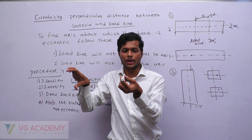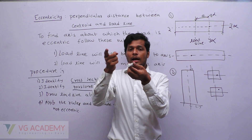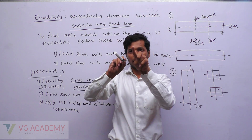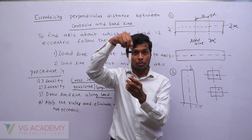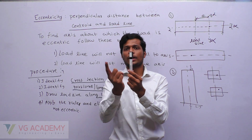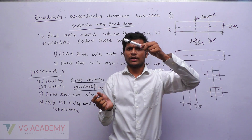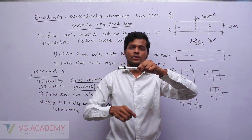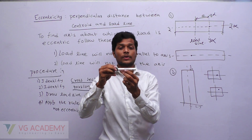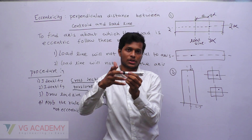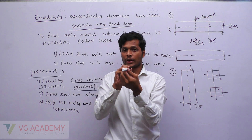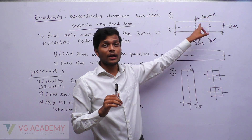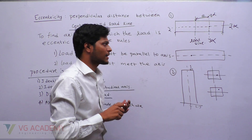This load is eccentric about the X axis. You can see this is the X axis if this is the beam — that is the reason I will write the bending moment like this. If it is eccentric about the Y axis, I should write the bending moment differently. If it is the torsional axis, I represent the bending moment accordingly.